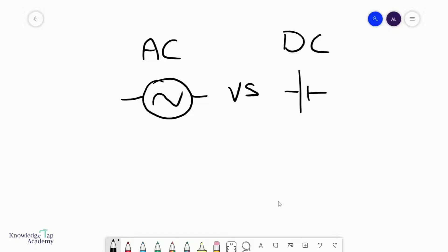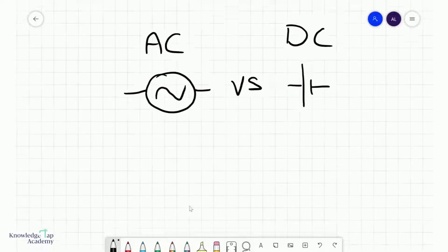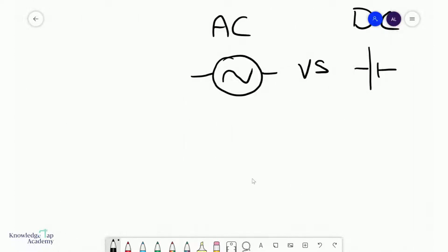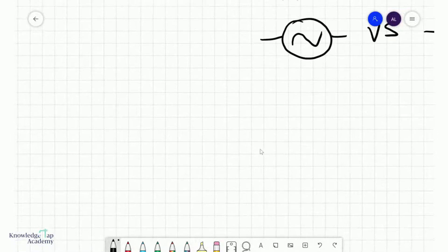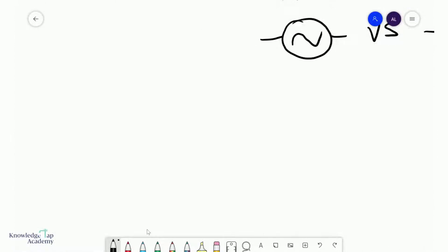In this video, we're going to talk about the difference between alternating and direct currents. When I say alternating current, what I actually mean is an alternating source. What exactly makes a source an alternating one?